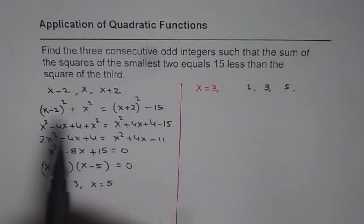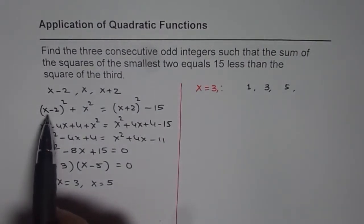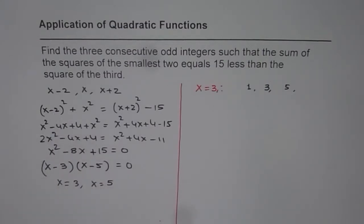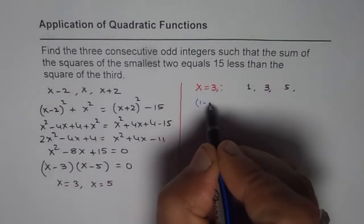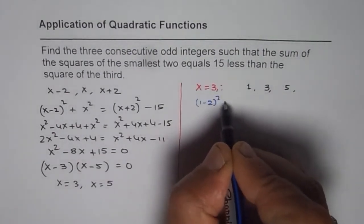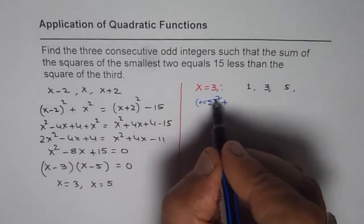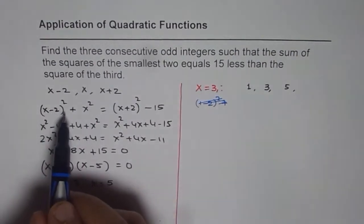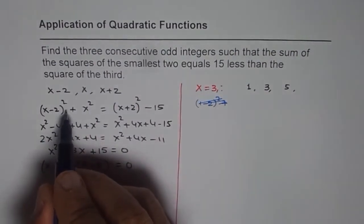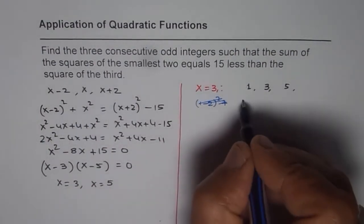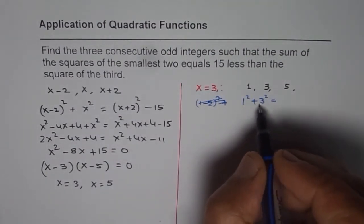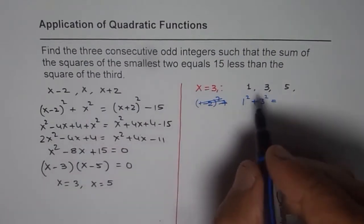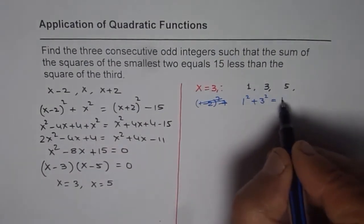Let us check and verify. Sum of the squares means first square plus 3 square. So it is 1² + 3². It equals how much? 1² is 1, 3² is 9, so it is 10.